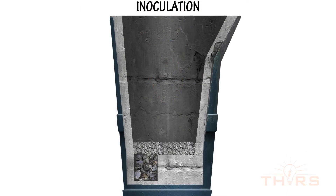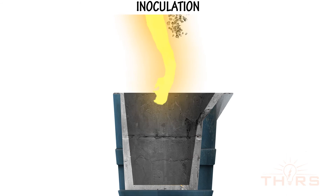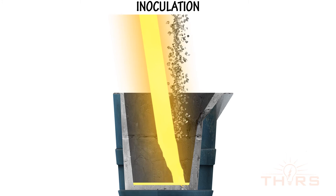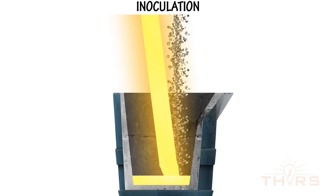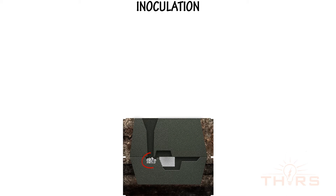Inoculants can be added in the ladle of molten metal before mold pouring begins, in the stream of molten metal during pouring, or in the actual molds placed somewhere in the gating system.